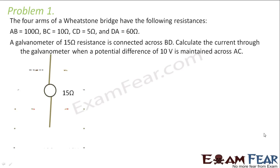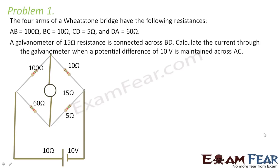The first problem here is: the four arms of a Wheatstone bridge have the following resistances — let us name them A, B, C, and D — as you can see in the figure. The galvanometer has a resistance of 15 ohms. Calculate the current through the galvanometer when a potential difference of 10 volts is maintained across AC. So you have to calculate the value of the current which flows through the galvanometer.